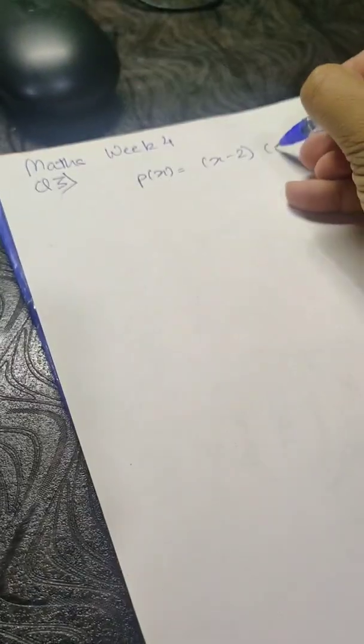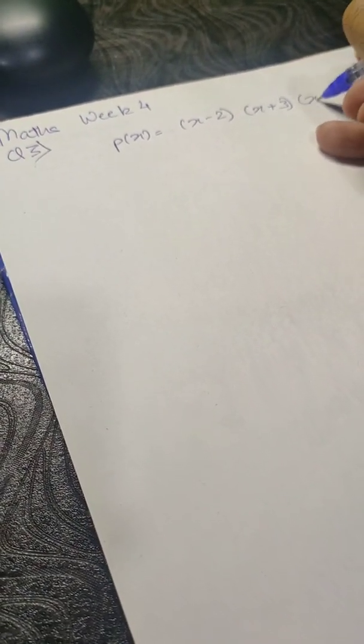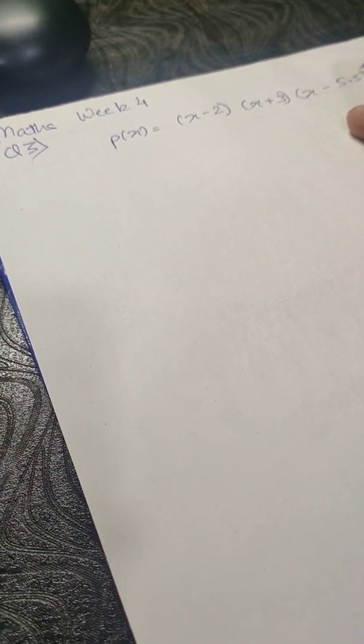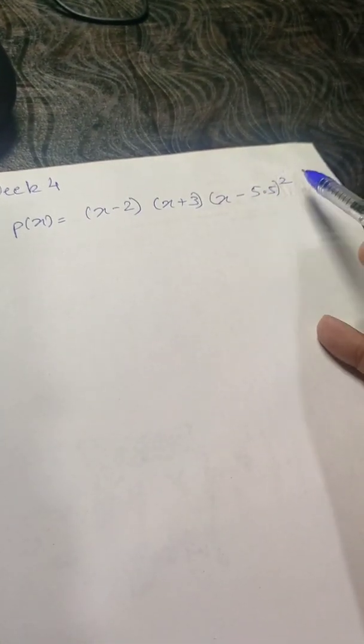are x minus 2, x plus 3, x minus 5.5 the square. Now here, the multiplicity of this particular factor is 2, and then these are 1. Now to solve, we have to find basically the range or something.